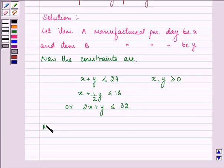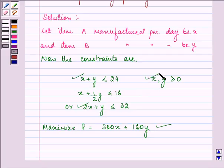And we need to maximize our profit function, say P. Profit earned on x is 300 and profit earned on y is 160. So we need to maximize this profit function subject to these constraints.